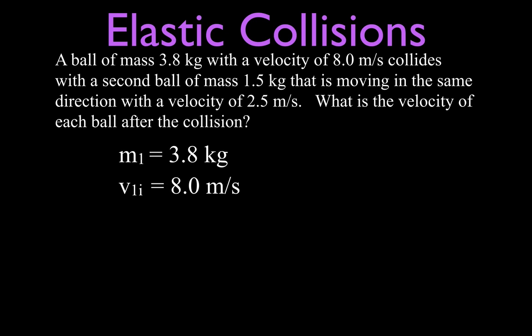So what I like to do first is because we have two masses and two velocities, I like to write everything down. We have M1 = 3.8 kilograms with velocity 8 meters per second, and M2 = 1.5 kilograms with initial velocity 2.5 meters per second. Because we have two masses that are both moving, we're going to figure out the final velocity of mass 1 and final velocity of mass 2.